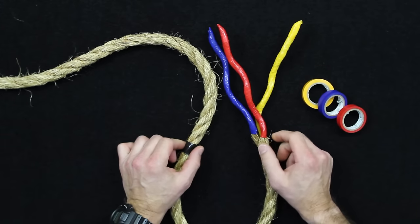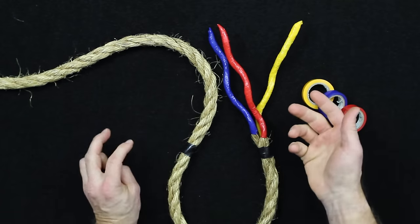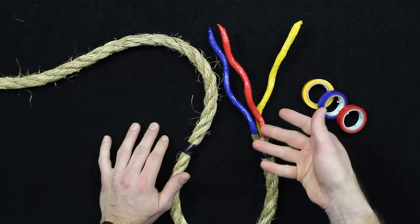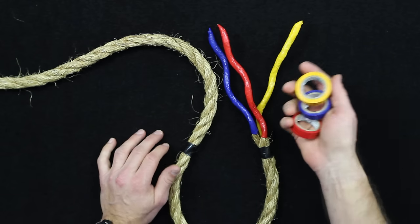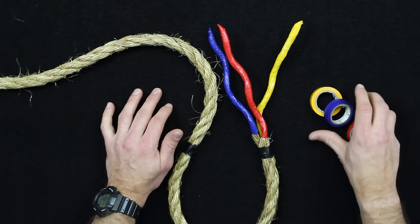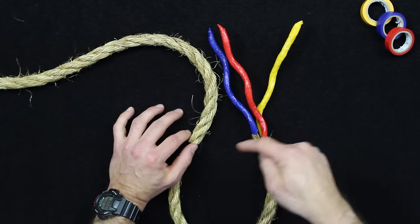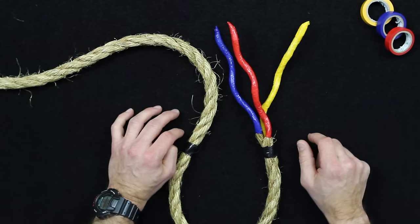Alright guys, so to start an eye splice, the first thing that I've done to really give myself a training aid and something I'd highly recommend as you're getting into learning how to splice, especially an eye splice, is to get some different colored electrical tape. This is available at the hardware store in a multi-pack with some other colors too. I went with the old primary color standby so I could talk through each actual strand.